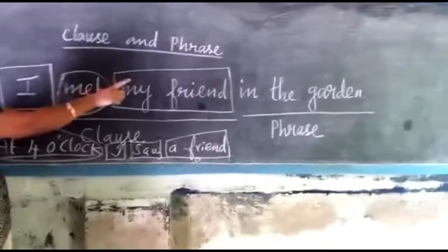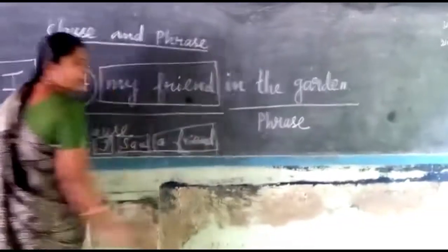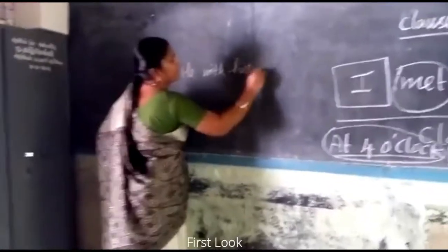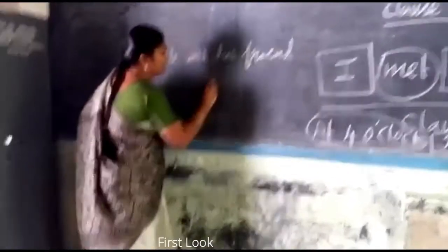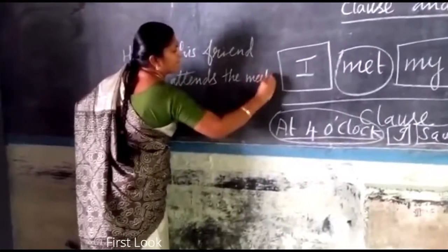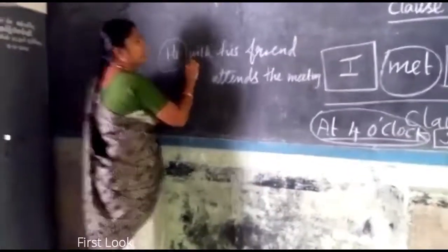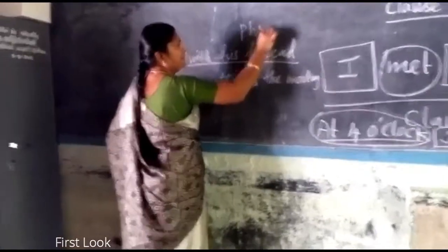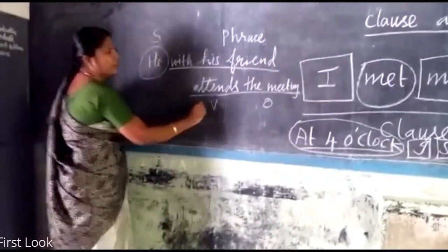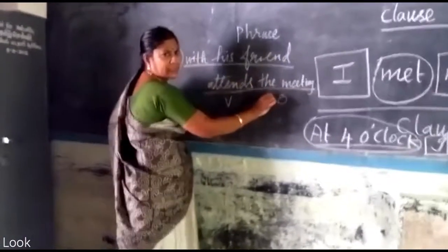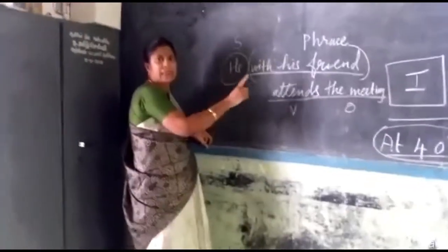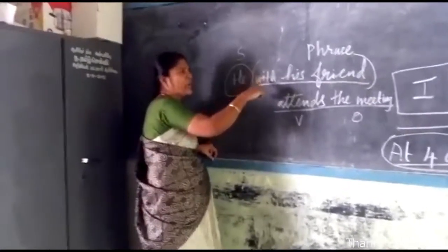As I said earlier, a phrase comes either in the beginning, in the end, or in the middle. Here, we will see: 'He with his friend attends the meeting.' Here, 'he' is a subject, 'with his friend' is a phrase, and 'attends the meeting' is the verb and object. The sentence 'He attends the meeting' is completed. But 'with his friend' is a phrase — it gives additional information that he did not attend the meeting alone, he attended with his friend.